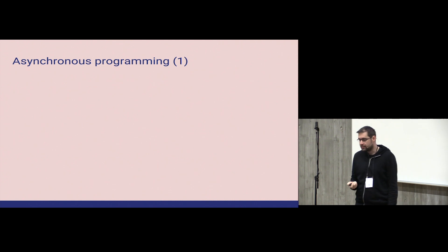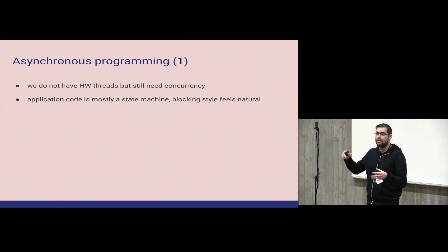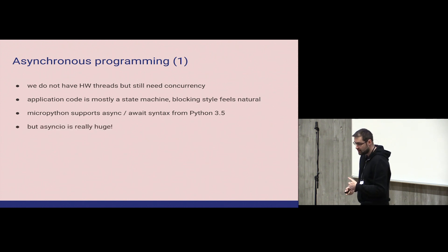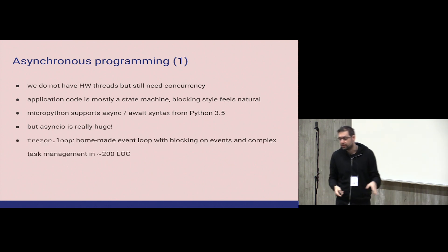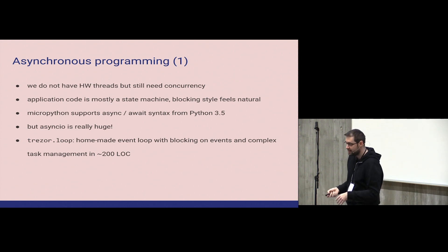Another feature we use is asynchronous programming, which is really nice. We do not have hardware threads on the device yet. But we still need some concurrency. Why? Because if you are writing complex code of a state machine, it can get really, really messy. And blocking style of writing code feels really natural. And MicroPython supports this syntax from Python 3.5, so why not use it? But again, there is an asyncio library, which is really cool, don't get me wrong. But it's really big for microcontrollers. So again, we made an event loop with blocking and blocking on events and complex task management. Again, it's around 200 lines of code. I really think that if you have a module that is bigger, then you are probably doing something wrong.